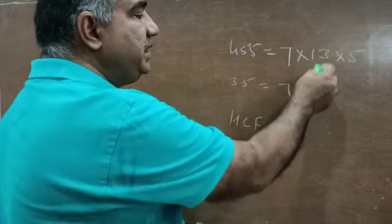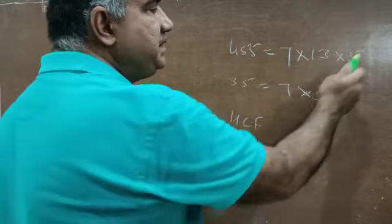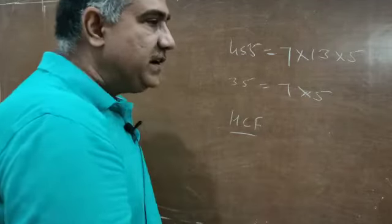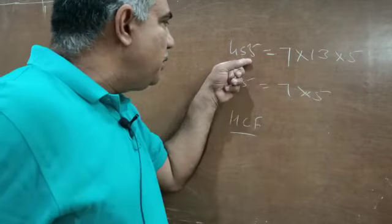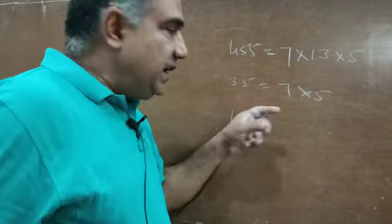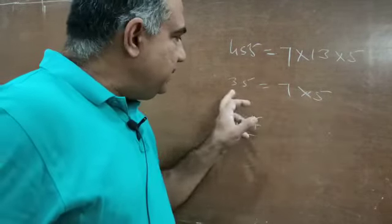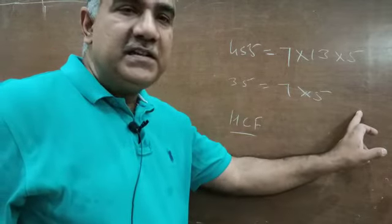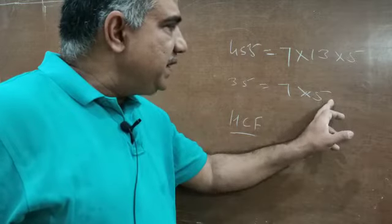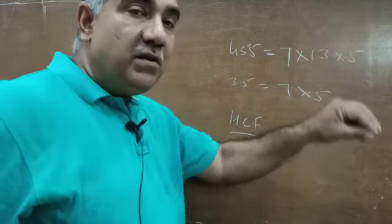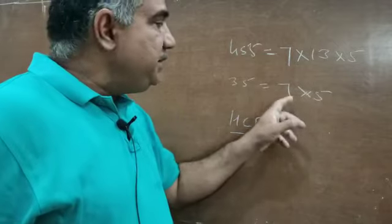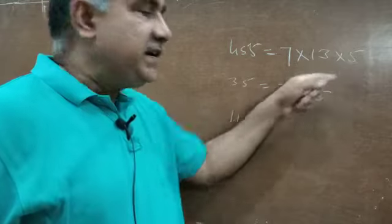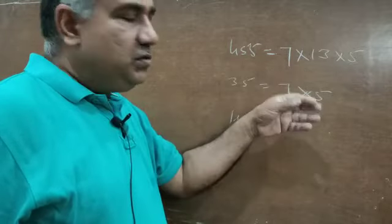Looking at the factors: 13 is not common. 5 is a common factor of 455 and 35, but 5 is not the HCF because HCF is the highest common factor. 7 is also a common factor. So even though 5 is undoubtedly a common factor, it is not the highest common factor — 7 is the highest common factor.